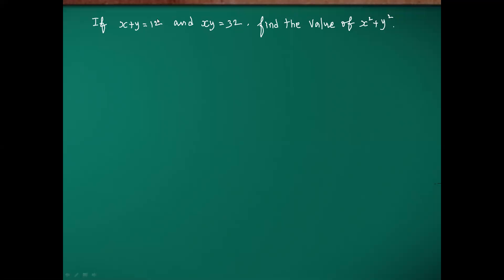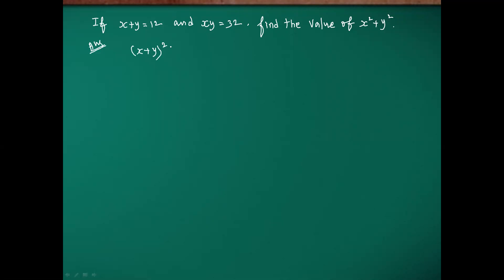If x plus y is equal to 12 and x y is equal to 32, find the value of x square plus y square. We have to use the x plus y whole square formula.